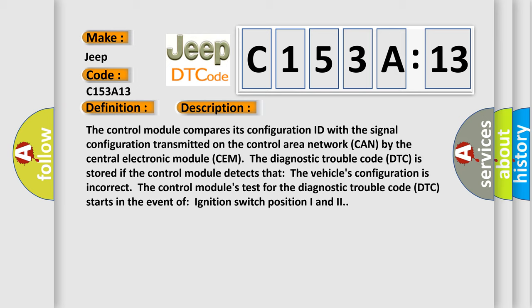The diagnostic trouble code DTC is stored if the control module detects that the vehicle's configuration is incorrect. The control module's test for the diagnostic trouble code DTC starts in the event of ignition switch position ON2.